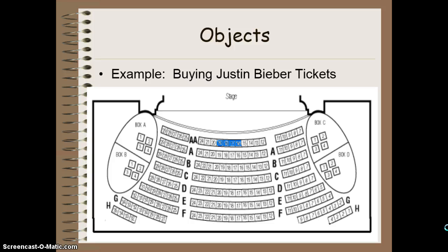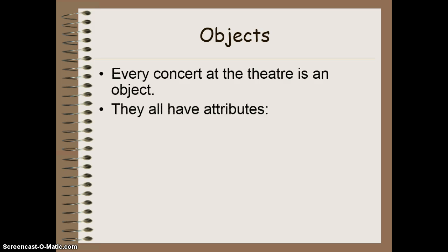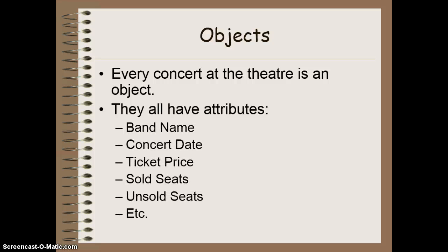Let's take one more example to see if we can figure out how this works. This example will look at buying Justin Bieber tickets at a concert, because I know we're all big Justin Bieber fans in this class. We need to remember that every concert in a theater is itself an object, and each concert will therefore have attributes. Hopefully you came up with things like the band name, the date of the concert, the price of the tickets, which seats are sold, which are unsold, and so on.